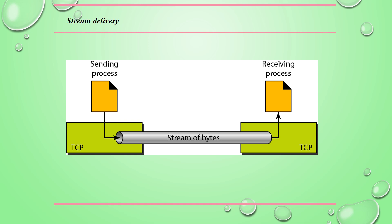There are a number of services provided by TCP. The first service is that it is basically a stream-oriented protocol, so it allows the sending and receiving process to send and accept data as a stream of bytes. TCP creates an environment with an imaginary tube carrying a stream of bytes, as shown in the figure, which carries the data across the internet. This figure shows the simplest view of this type of delivery supported by TCP.